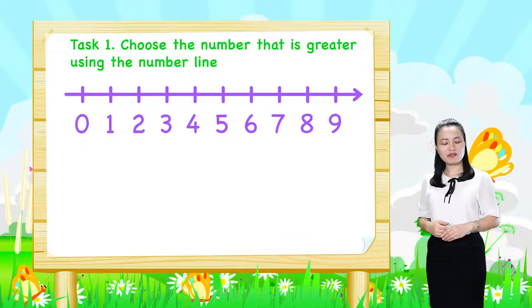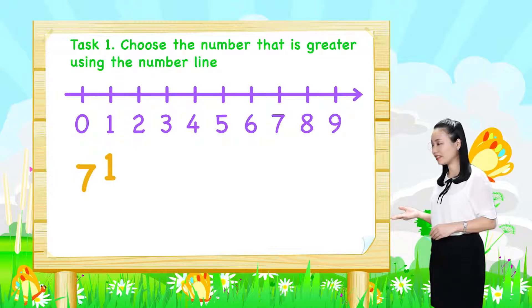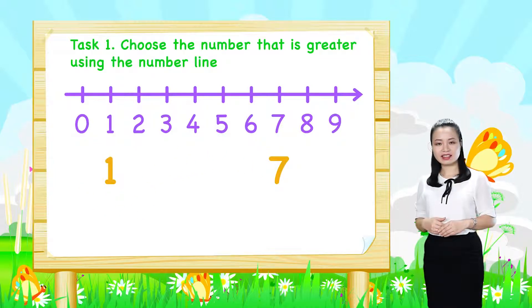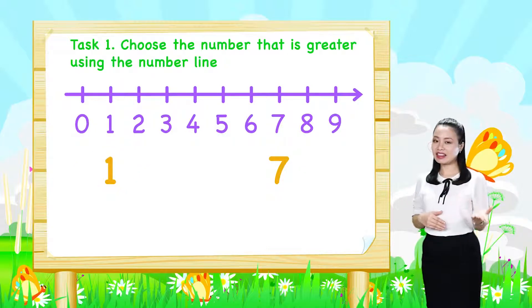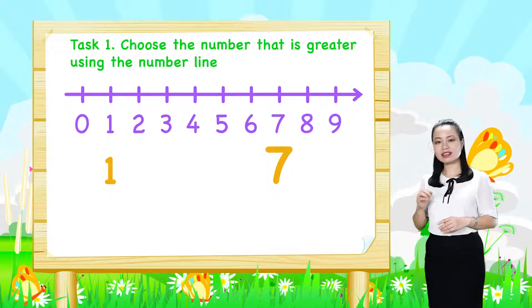First, for the pair 1 and 7, number 7 is to the right of number 1. Therefore, 7 is greater.